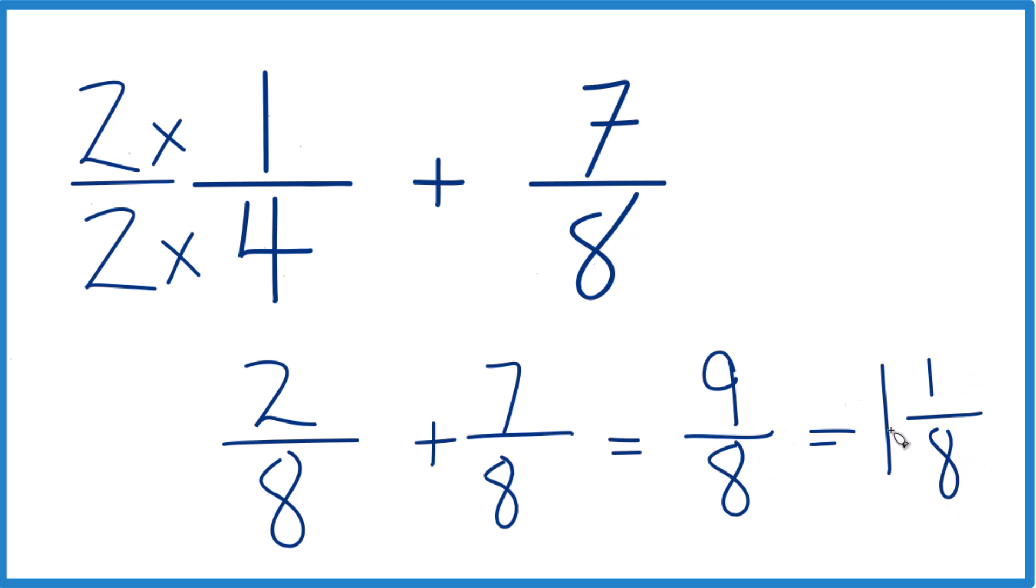So 1 and 1 eighth, that's equal to 9 eighths. And you can check it, 1 times 8 is 8, 8 plus 1 is 9, that's your 9. And we kept the 8 the same. That's how you add 1 fourth and 7 eighths. This is Dr. B, thanks for watchin'.